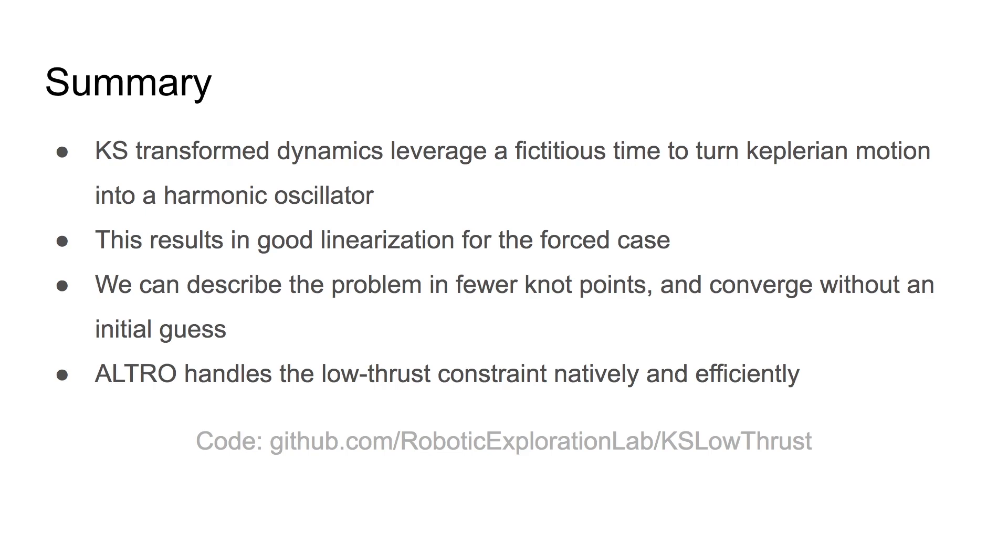In summary, our work has examined low-thrust trajectory optimization using the KS-transformed orbital dynamics. These dynamics are linear in the unforced case, resulting in a harmonic oscillator for two-body motion, and in the forced case, behave well under linearization. This allows us to describe the solution using fewer knot points and converge to a solution without any guess at all. The solver used in this, ALTRO, handles the low-thrust constraint natively and efficiently. All of the code used to produce the examples is on the GitHub posted below. Thank you for watching.